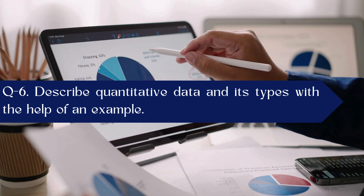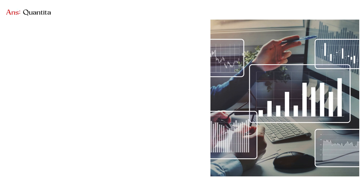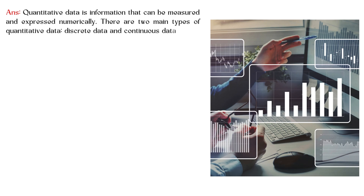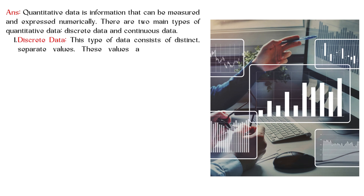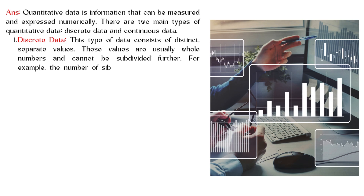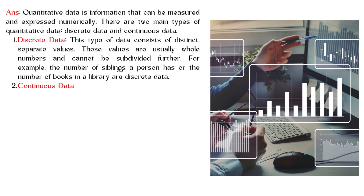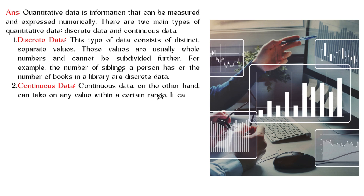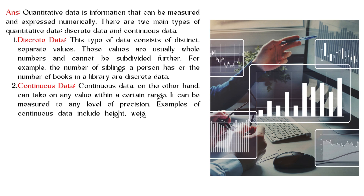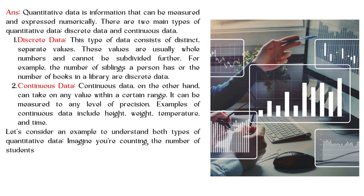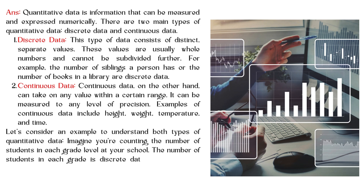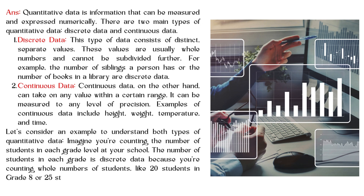Describe quantitative data and its types with the help of an example. Quantitative data is information that can be measured and expressed numerically. There are two main types: discrete data and continuous data. Discrete data consists of distinct, separate values — usually whole numbers that cannot be subdivided further. Continuous data, on the other hand, can take on any value within a certain range and can be measured to any level of precision.